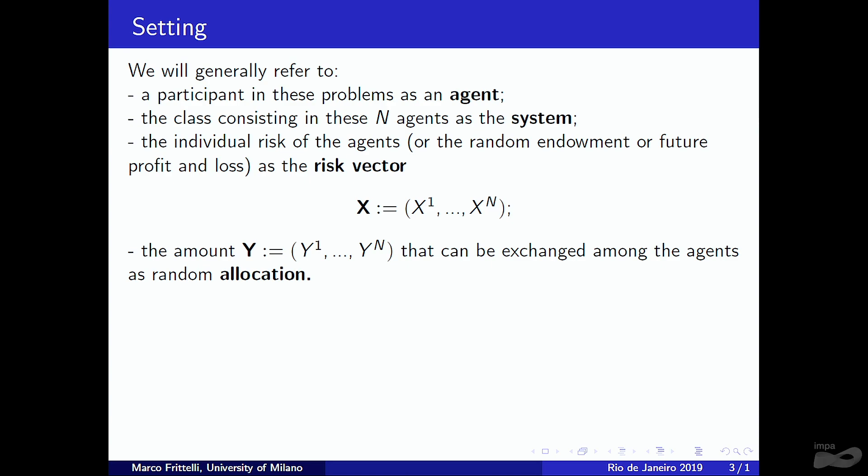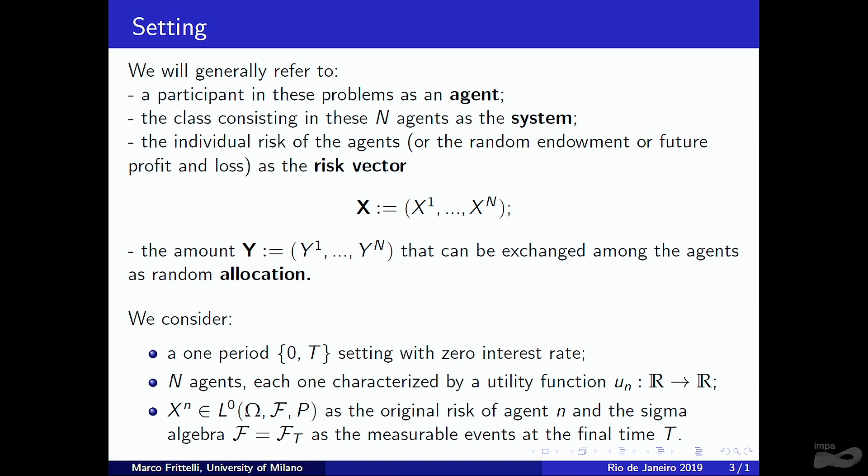The amount that can be exchanged among agents I denote Y, a random allocation Y₁ to Yₙ. The setting is simple: one period only, no interest rate, and each agent is characterized by a single utility function. This will be generalized in the second part.